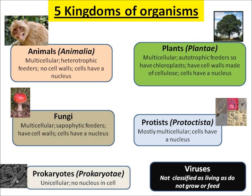There are five kingdoms of organisms. Animals are made of many cells — they're multicellular. They're heterotrophic feeders, which means they need to eat other things. They don't have cell walls, but they do have a nucleus in their cells.